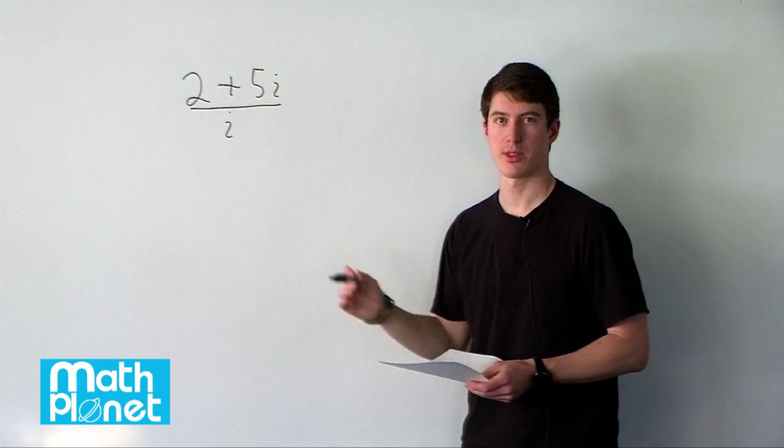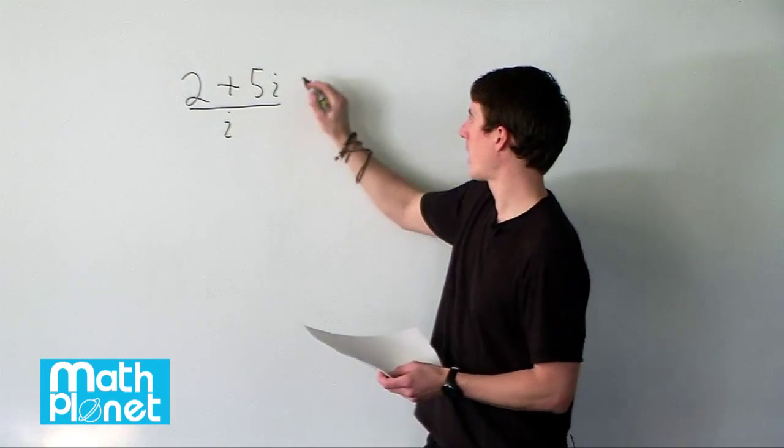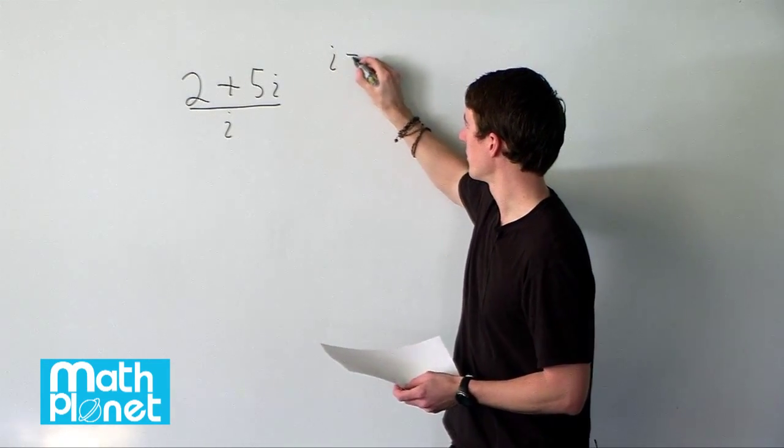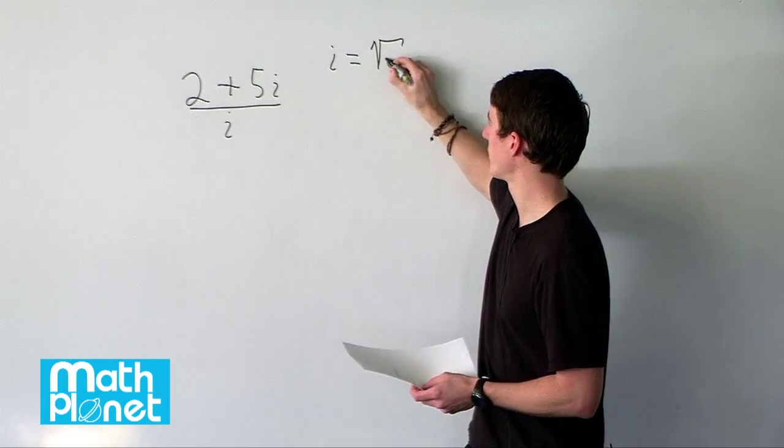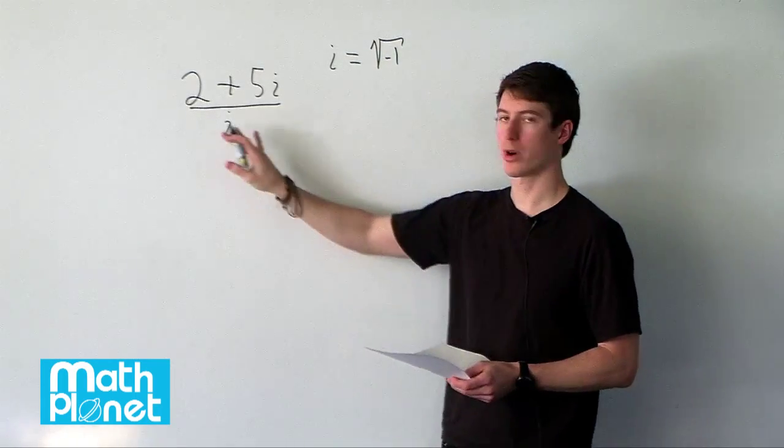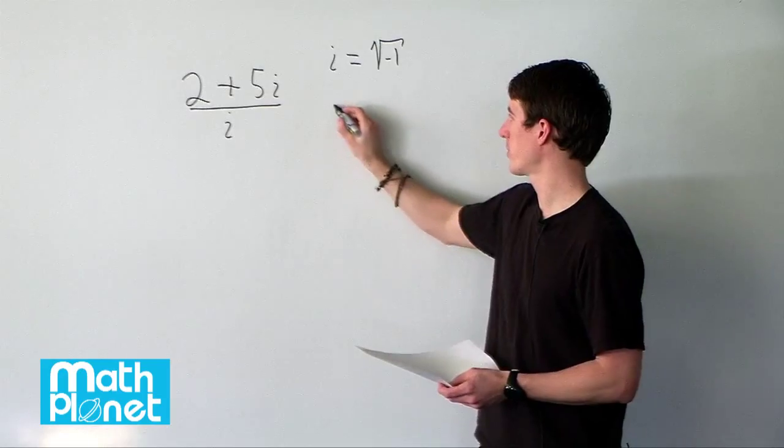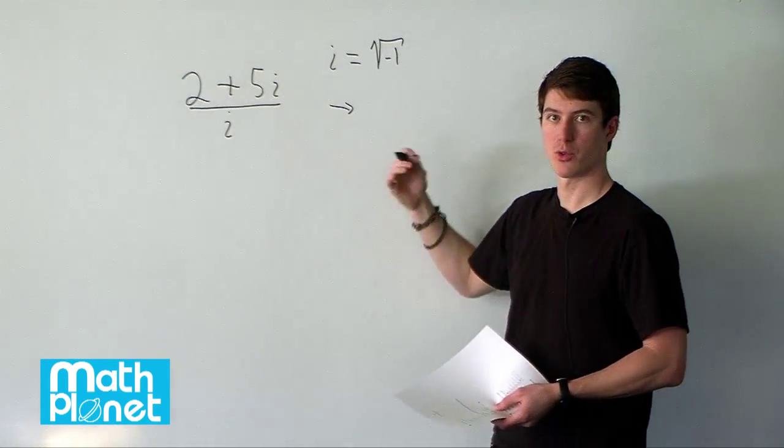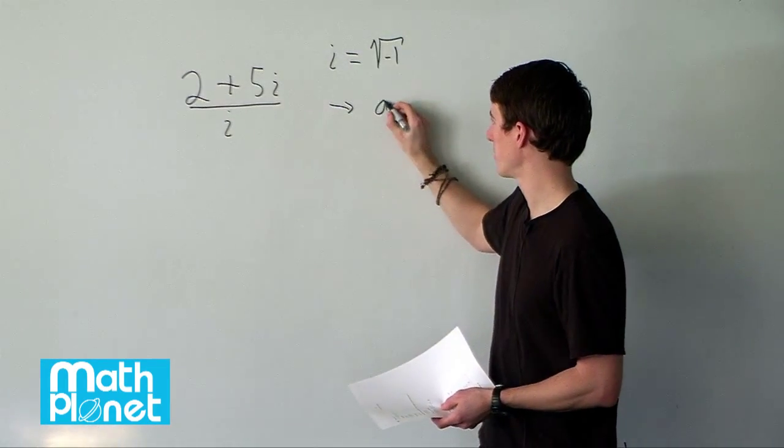So i is of course the imaginary number where i is equal to the square root of negative 1. So we want to write this in the normal form. We want to write this as some normal real numbers, a and b,